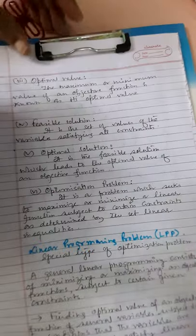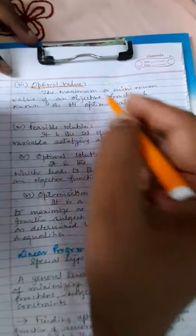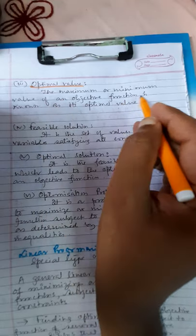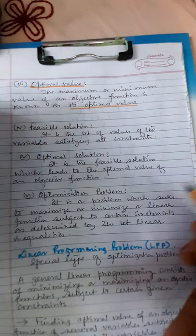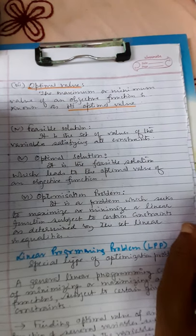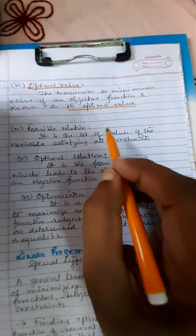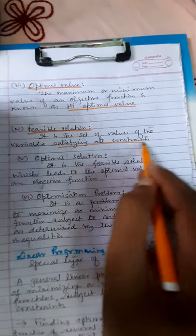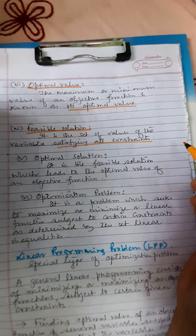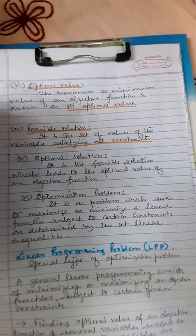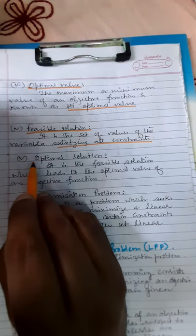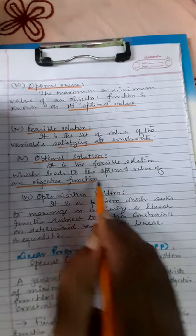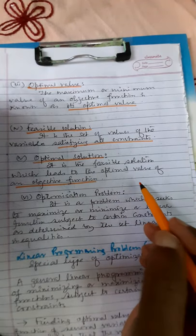Next is optimal value. What is optimal value? The maximum or minimum value of an objective function is known as its optimal value. Feasible solution is the set of values of the variables satisfying all the constraints. Optimal solution is the feasible solution which leads to the optimal value of an objective function.